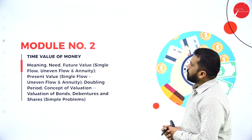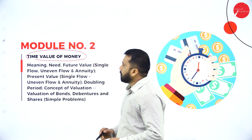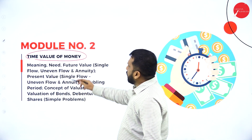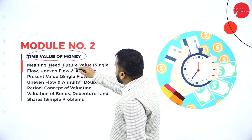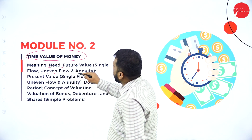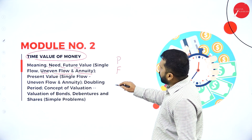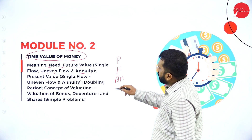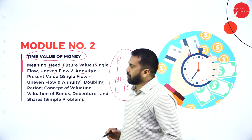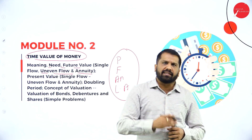Unit two is the time value of money. It covers meaning, need, future value — single flow and uneven flow — annuity, present value, future value, and loan amortization. These are the topics covered under time value of money, which we will go into in detail later.